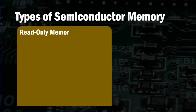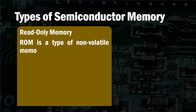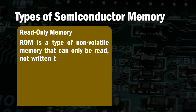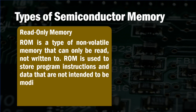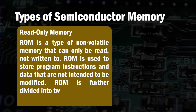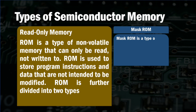The second type of semiconductor memory is read-only memory (ROM). ROM is a type of non-volatile memory — it is read memory, not write memory. ROM is used to store program instructions and data that are not intended to be modified.